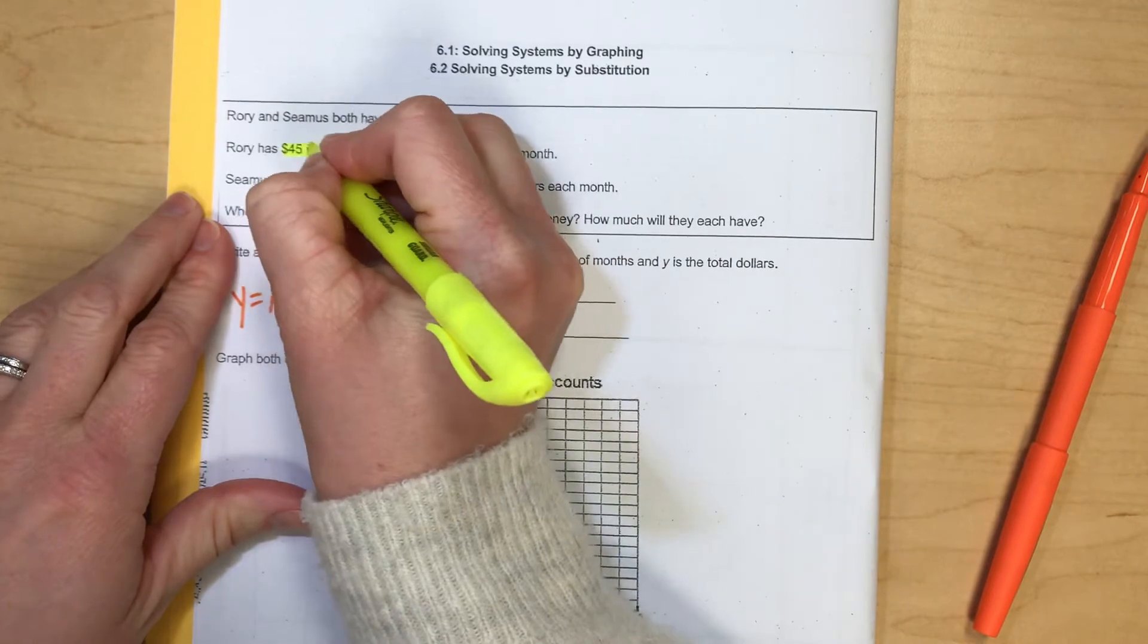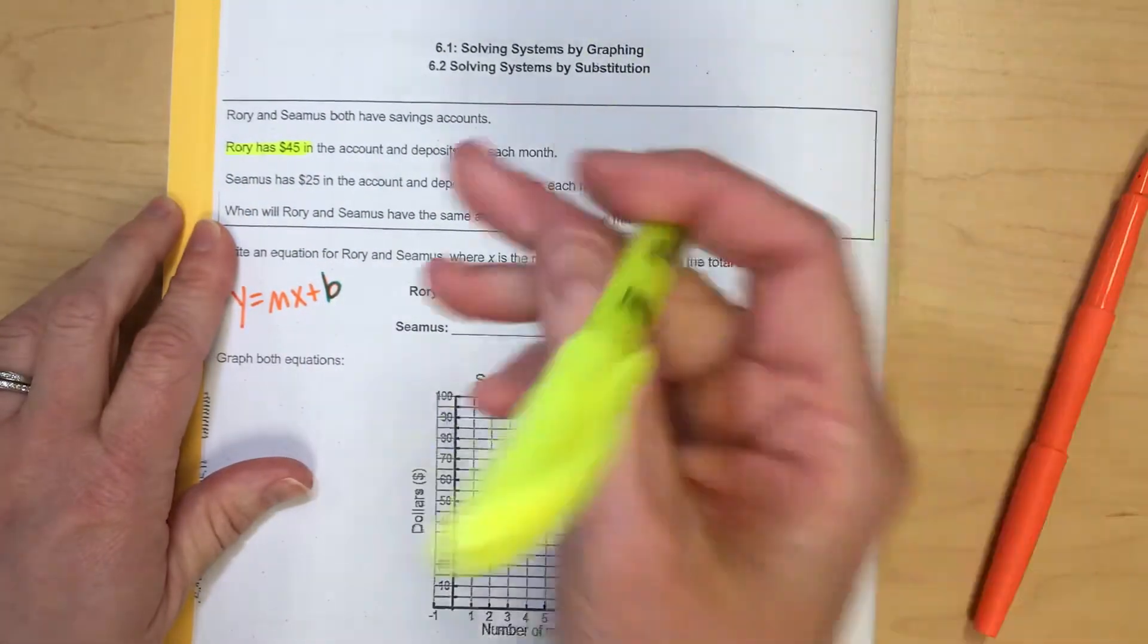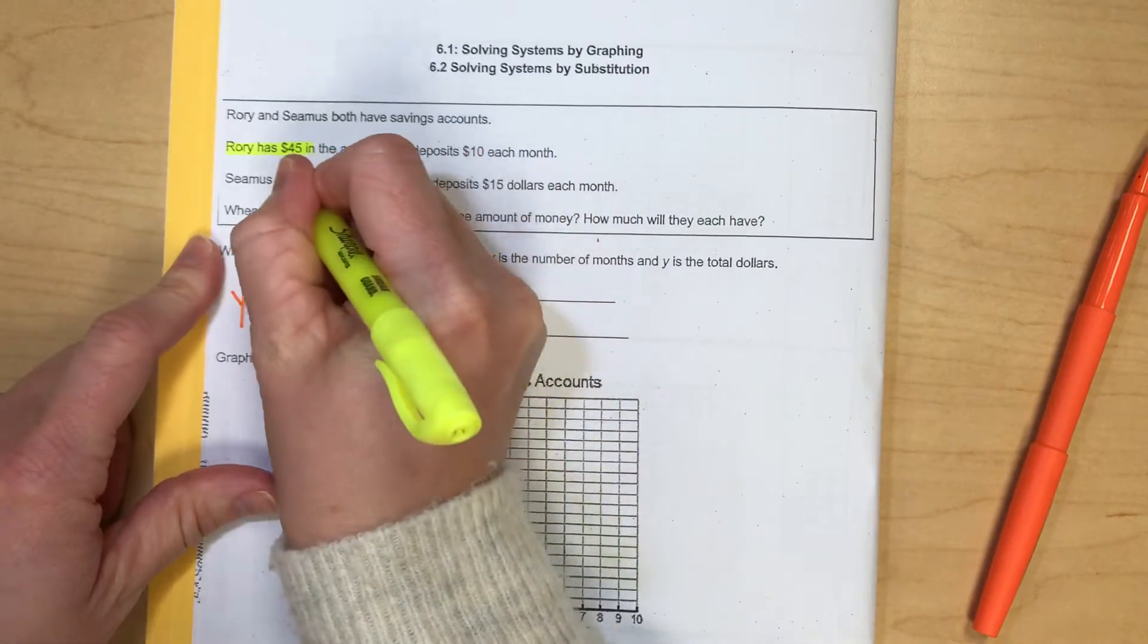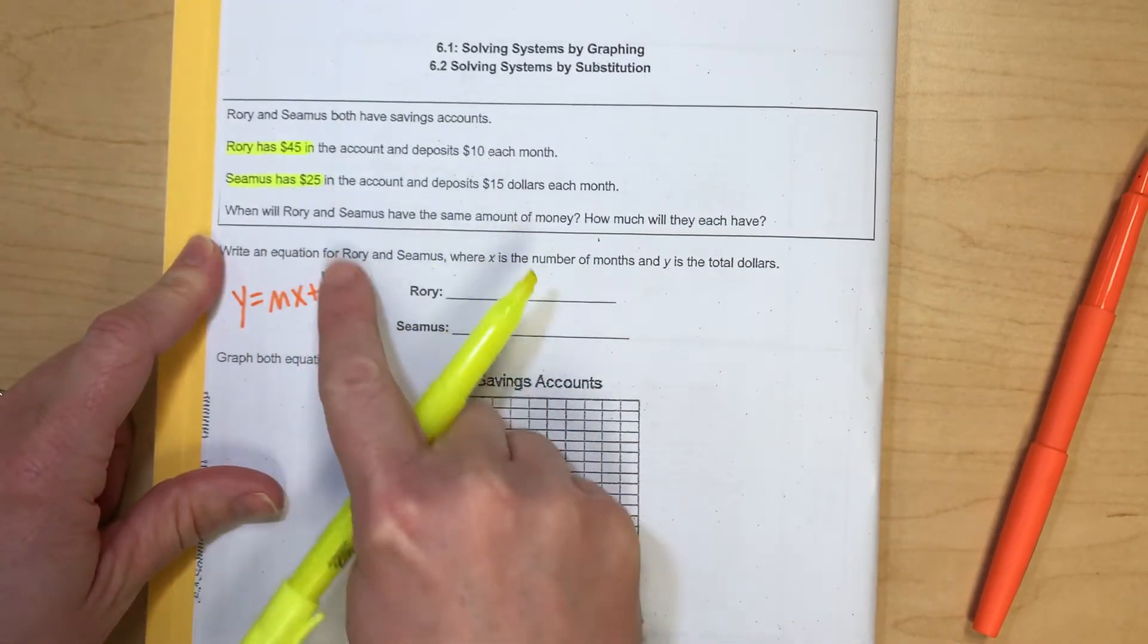Rory started with $45, so that's going to be my B for Rory's function. And Seamus started with $25. So B for Seamus's function.